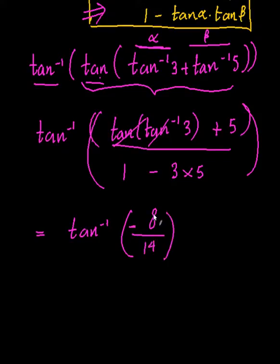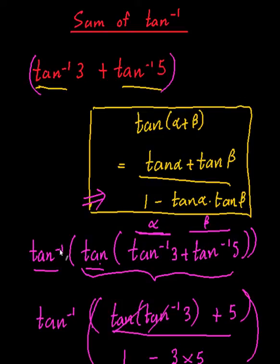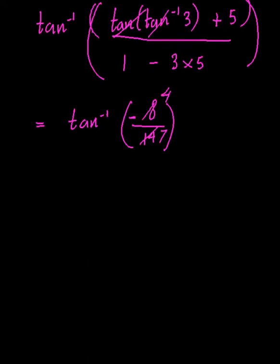Okay, and of course you can simplify that to be 4 on 7. So there you go, so that's how you sum up tan inverses. The trick is to use the identity tan inverse of tan. Okay, so you can, if you want...